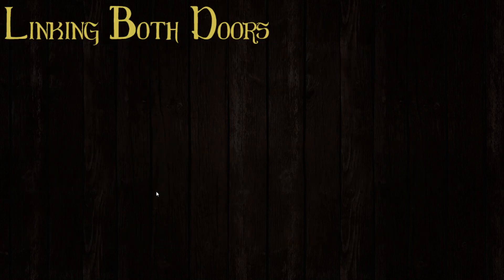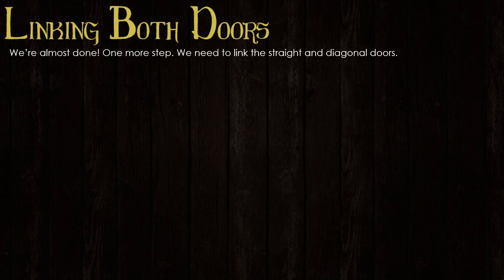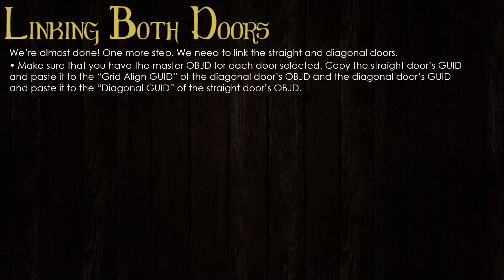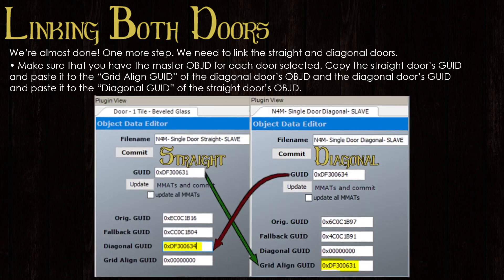One more step: linking both doors. We need to link the straight door and the diagonal door. Make sure that you have the master OBJD for each door selected. We're going to open a separate instance because that's the easiest way to do it. We copy the straight door's master GUID and paste it in the grid-aligned GID in the diagonal door's OBJD. Then we take the diagonal door's master GUID and paste that in the diagonal GID of the straight door's OBJD.